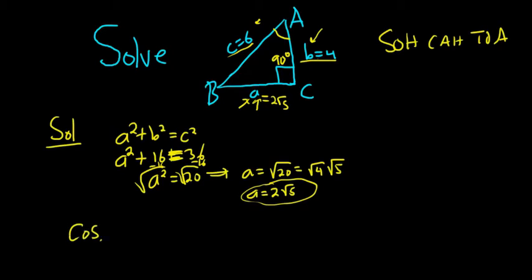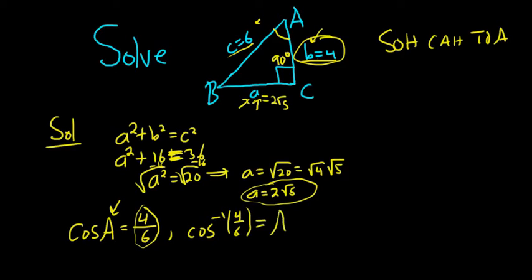So the cosine of a, it's adjacent over hypotenuse. So the adjacent here would be 4. Hypotenuse is 6. So now you can use the inverse trig function. So cosine takes a and sends it to 4 over 6. So the inverse function takes 4 over 6 and sends it back to a. So if you put this in your calculator, you should get a is about 48 degrees. So there's a.